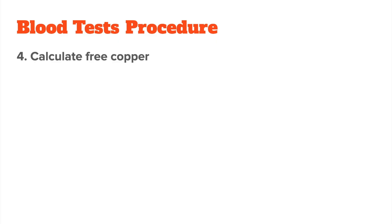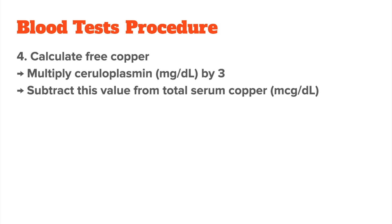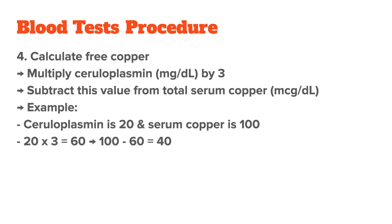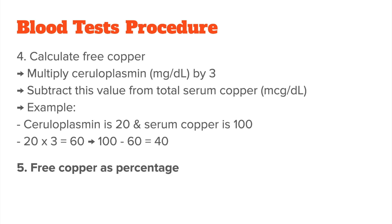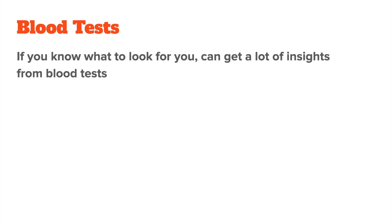And four, check if you have free copper. To calculate free copper, your ceruloplasmin is multiplied by three, and this value is then subtracted from the total serum copper level. For example, if your ceruloplasmin is 20 and your serum copper is 100, you multiply 20 by three and subtract from 100 to get 40 — a fairly high free copper value. You can also calculate this as a percentage by dividing free copper by total copper, giving 40% free copper, which is very high. Even though copper was technically within the normal range, the low ceruloplasmin and high free copper would still classify you as having a copper issue.